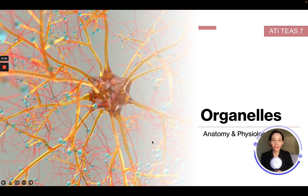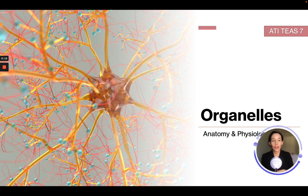Hello and welcome back to Module 2. In this module we are going to cover organelles and parts of the cell. Organelles are a substructure within the cell that has a specific job, and these are only found in eukaryote cells.